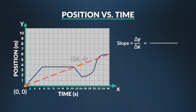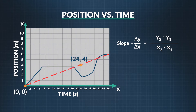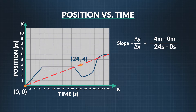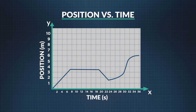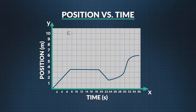You can pick any two points on the line when you do this. For example, you can pick the point (0, 0) and (24, 4). So final position minus initial position divided by final time minus initial time is your slope. Y2 is 4, y1 is 0, x2 is 24, and x1 is 0. When you plug these numbers into the equation, you get 4 minus 0 divided by 24 minus 0, which equals a slope of 0.17. The y-axis is position in meters and the x-axis is time in seconds, so the units are meters per second. A straight line going up on a position versus time graph represents a positive constant velocity, so we are moving away from the origin in the positive direction.